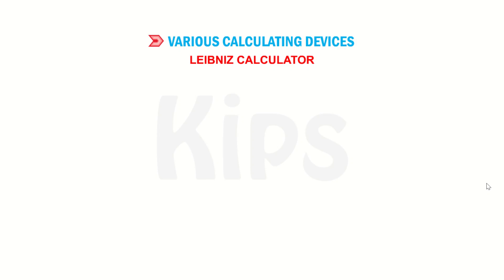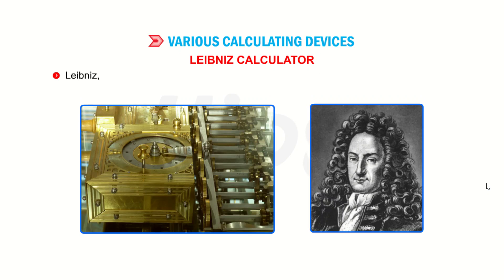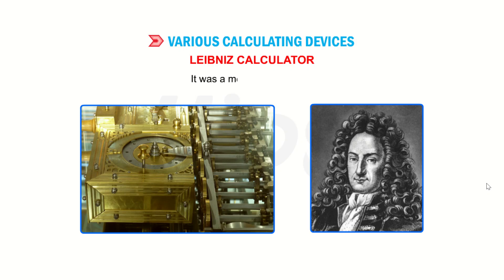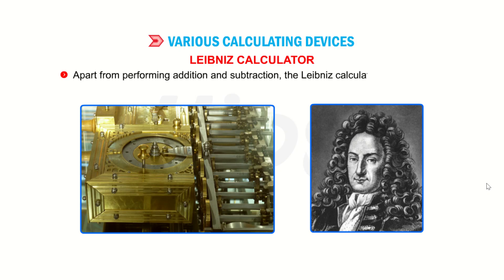Leibniz Calculator: Leibniz, the famous German mathematician, improved on Pascal's machine in 1671 to make the Leibniz Calculator. It was a mechanical device. Apart from performing addition and subtraction, the Leibniz Calculator could even do multiplication, division and find square roots.